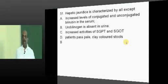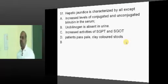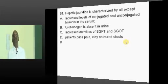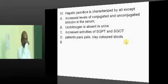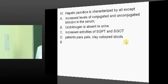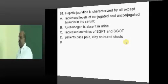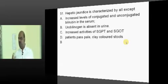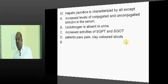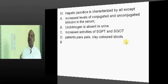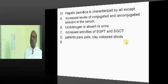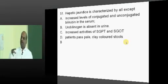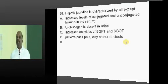Absent urobilinogen in the urine is an indication of which kind of jaundice? Obstructive jaundice. Why? Because bilirubin should go into the intestine first, where it gets converted into urobilinogen, which will then appear in the urine. In the case of obstructive jaundice, bilirubin cannot go to the intestine because there is obstruction in the bile duct.